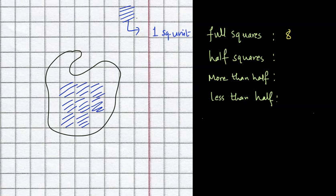But we can see many more than half squares. So let's shade them in different color. Let me just shade them in brown. So this is more than half, this is more than half, this is more than half, this is as well more than half, another one.